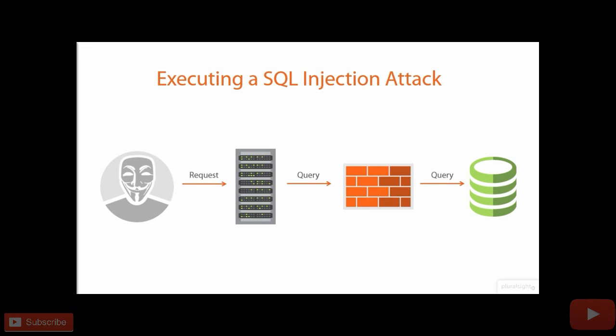The query executes in the database and the database returns some data — back out through the firewall, back to the website, and eventually back to the user. This request and response lifecycle is very typical, and it's exactly what happens when someone's just browsing around on the website. But in this case, the request is very carefully crafted to be malicious — to execute an attack within the database — becoming a specially crafted query that returns data the application didn't intend to be returned, back via the HTML response to the attacker.